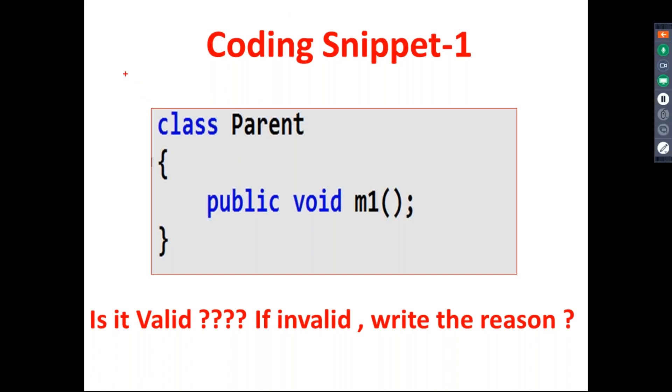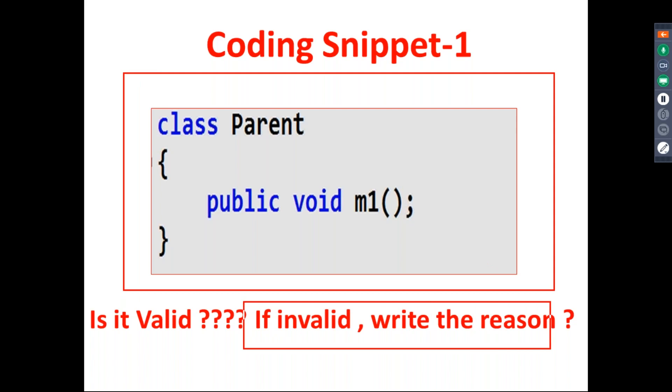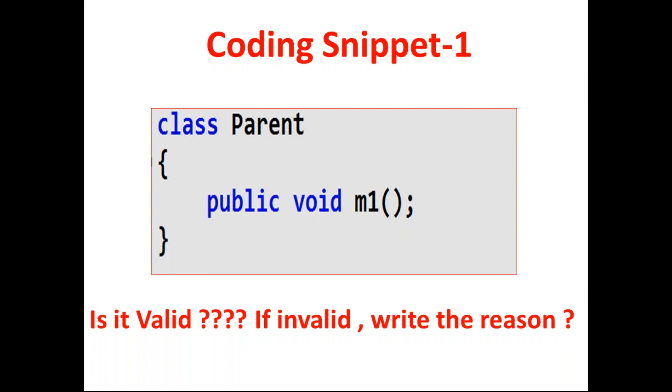Now you have to tell, is this one valid or not? If it is invalid, what is the reason? What is snippet one? Is this invalid because of so-and-so reason? You have to observe each and every word very carefully. Why is this invalid or why is it valid? Just add the reason in the comment section. This is my coding snippet one: class Parent, public void m1, semicolon is there.